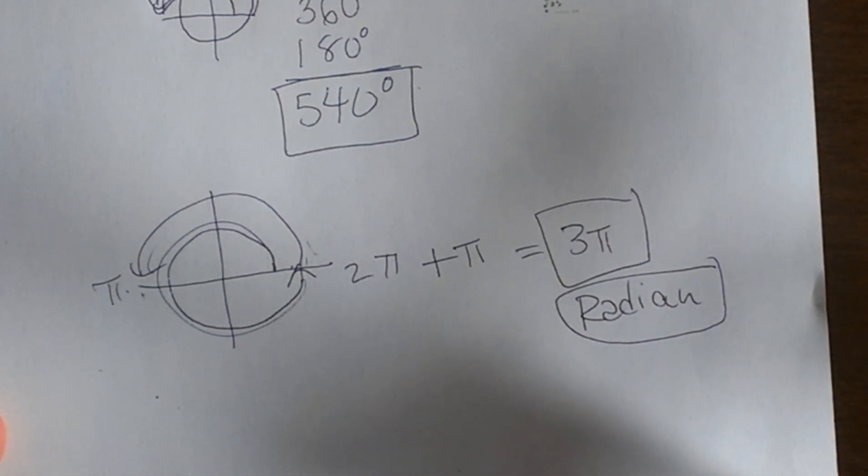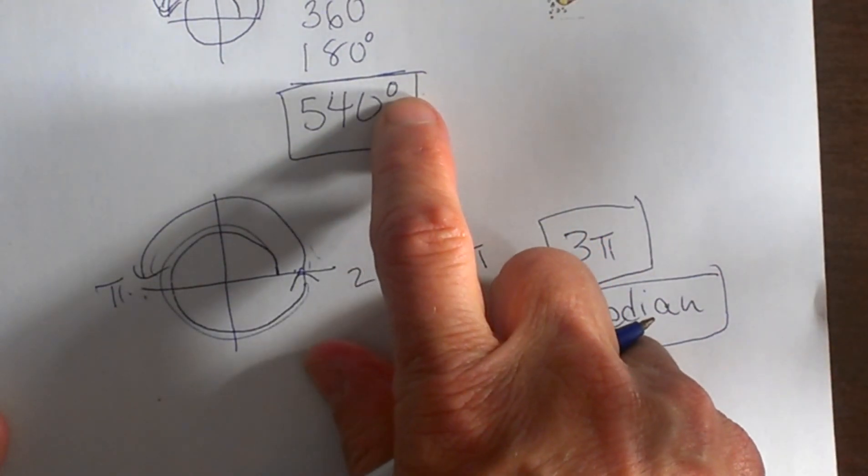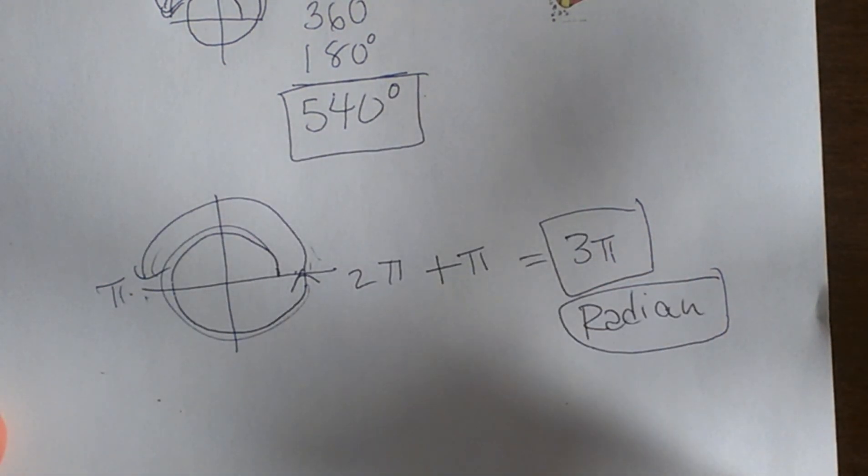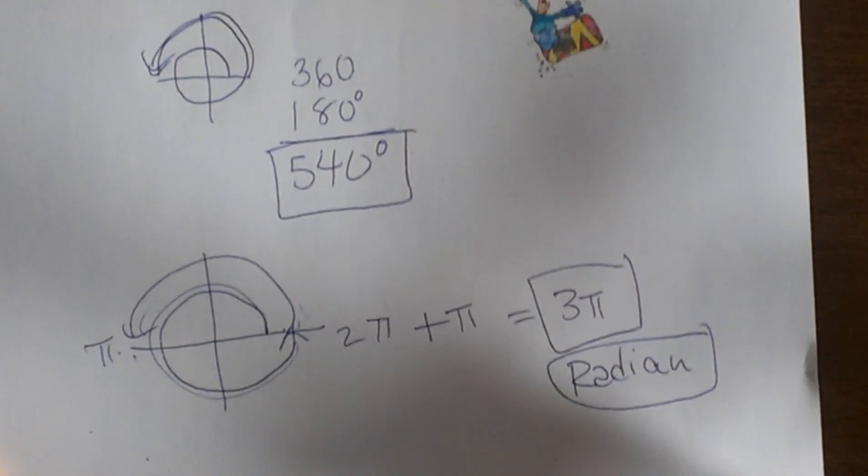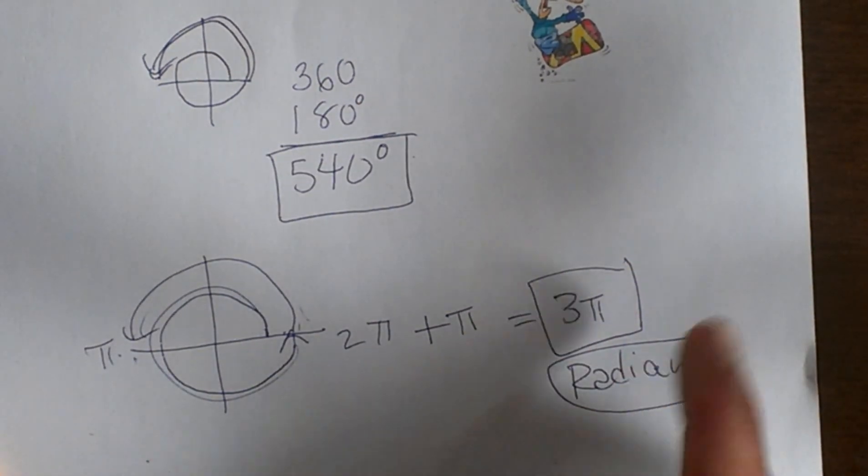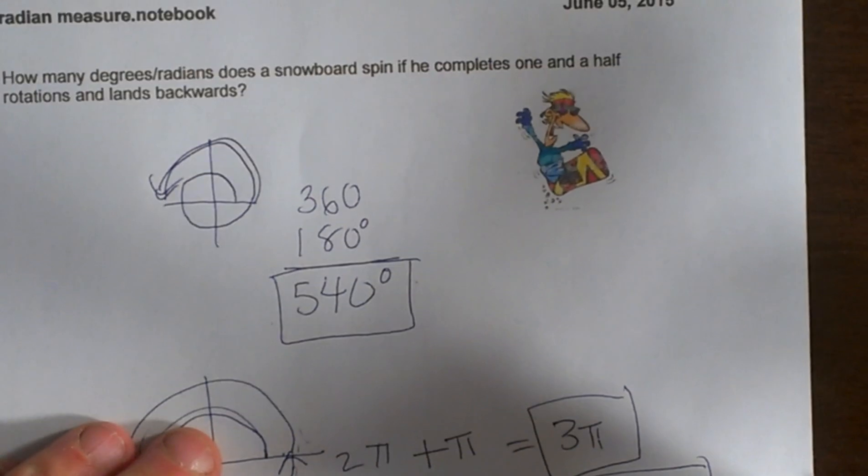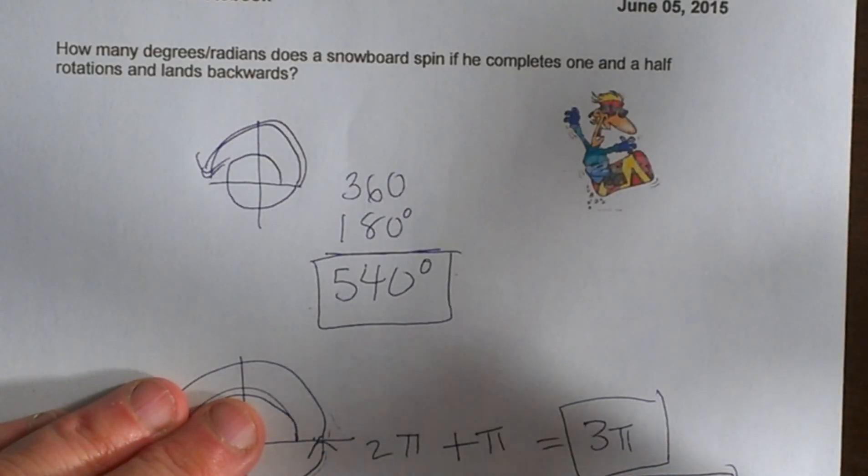A couple quick helpful hints: if you see the little degree mark, you know it's in degrees. If you don't see anything, you can assume that it's in radians. That's the directive on how to interpret angle measures. Hope this video was helpful on remembering radians and degrees.